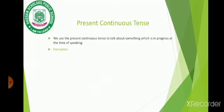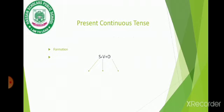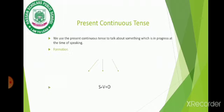Here is its formation. We have a simple formula that is always used in active sentences: S plus V plus O. S stands for subject, V stands for verb, and O stands for object. Subject is the person who acts in a sentence, verb is the action performed by the subject, and object is the thing affected by the action of the subject.